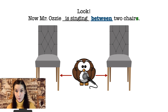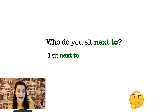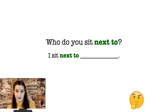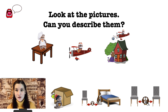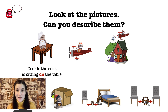And I have a question for you: when you are at school, who do you usually sit next to? Who is your neighbor? Pause the video and write one sentence. For example, I sit next to Masha, or I sit next to Peter, or I sit next to Mr. Barista — usually when I'm at school, when I work. Now look at the pictures once again. Can you describe them? For example, look at picture number one — Cookie the cook is sitting on the table. Now pause the video and try to say sentences about all the pictures that you can see on the slide.